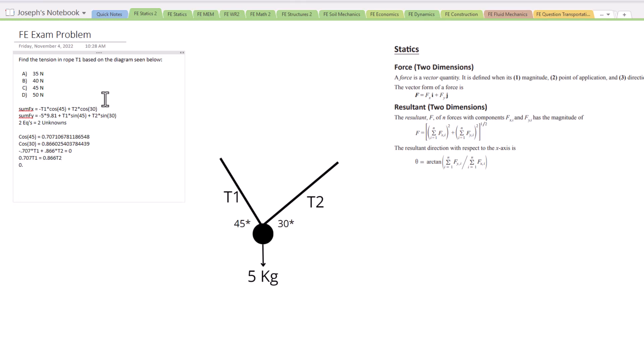Now 0.707 divided by 0.866. That's going to equal 0.8164. And so meaning T2 equals 0.8164 T1.